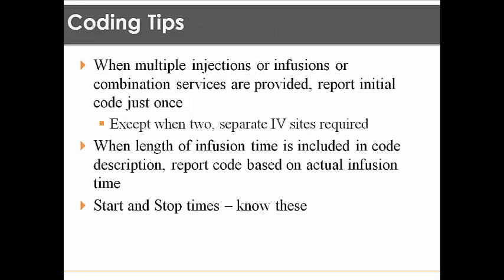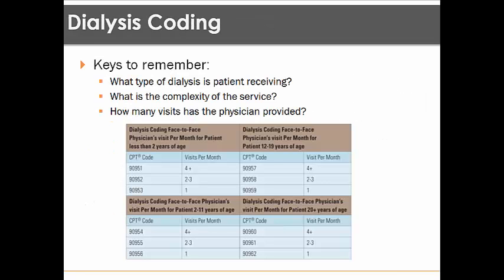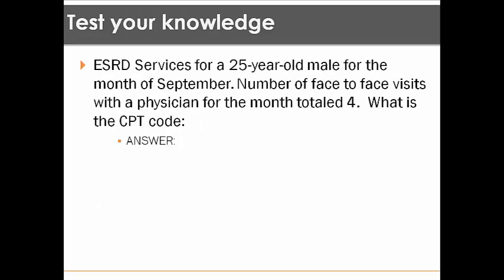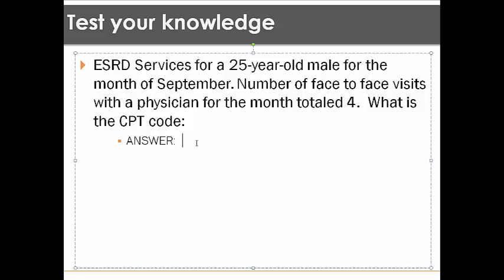Just to give you a little hint — remember our dialysis coding section. You can pause it to look up your code and then start it again to see the answer. The answer is 90960, which is for a patient that is 20 years or older and has four face-to-face visits for that month.